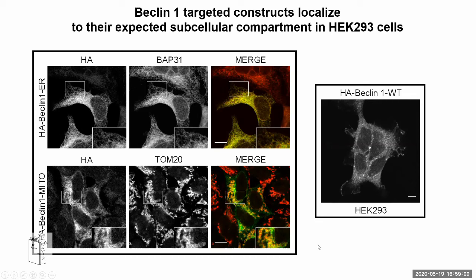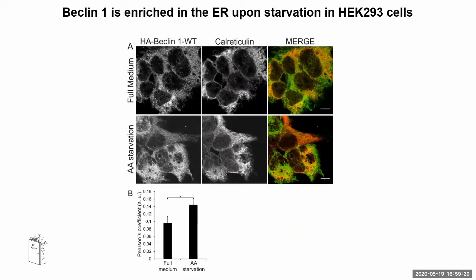We also wanted to see how the non-targeted Beclin-1 looked, and that showed a predominant cytoplasmic localization. We used this same cell line to see what happens to wild-type Beclin-1 upon starvation. We starved our cells with EBSS — a medium without amino acids and serum — and we could see that upon starvation, Beclin-1 was enriched in the ER, which would confirm the primary role of the ER.